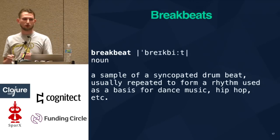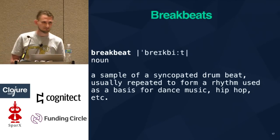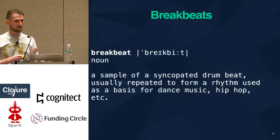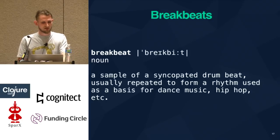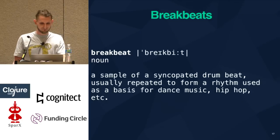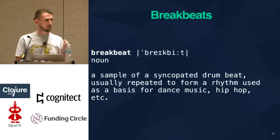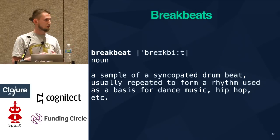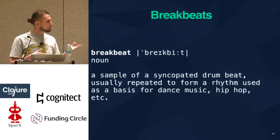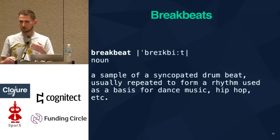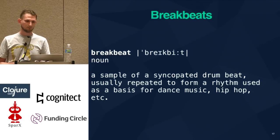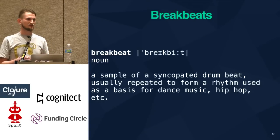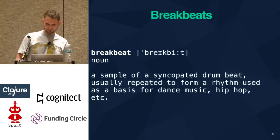The drums are usually taken from breakbeats. A breakbeat is a sample of a syncopated drum beat, repeated to form a rhythm used as a basis for dance music, hip-hop, etc. The breakbeat is literally a break in the middle of a song when the pitched instruments stop playing and the drummer plays solo. These most often come from funk, soul, or gospel records from the 60s and 70s. Syncopated really means that the accent is placed on the weak parts of the beat rather than the strong ones.